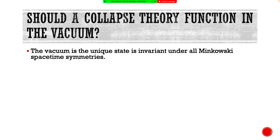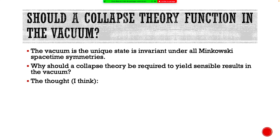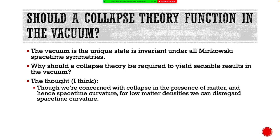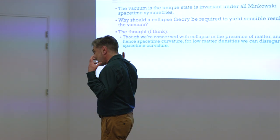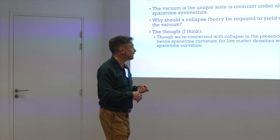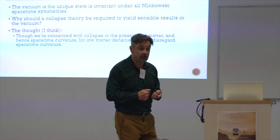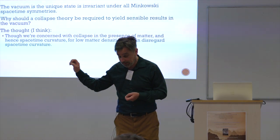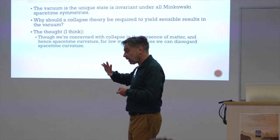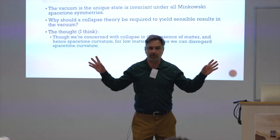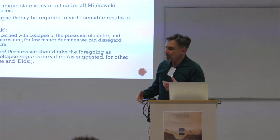But the question is, should a collapse theory function in the vacuum? I think the idea, and I think this is what I was thinking a number of years ago, is that we don't really care what happens in a vacuum. We're really interested in what happens in the presence of matter. And we like general relativity, so we think that in the presence of matter we don't have Minkowski spacetime, we have curved spacetime. But I think the idea was that should be negligible. We should be able to do this, our theory should work in situations in which the curvature of spacetime is low enough that we might as well be in Minkowski spacetime.